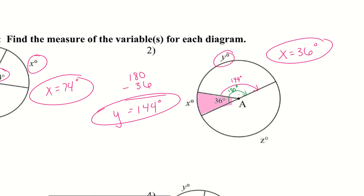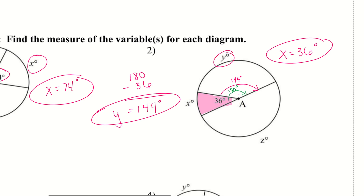For z, very similarly on the other side — there's no number here. There is an 'a', but that just says it's circle A; the center is at A. This whole thing is 180 degrees and it's not being divided by anything, so z also equals 180 degrees.